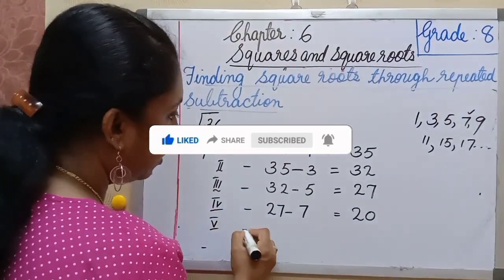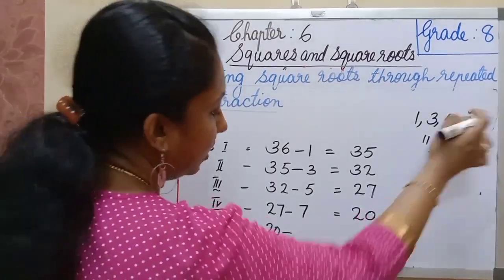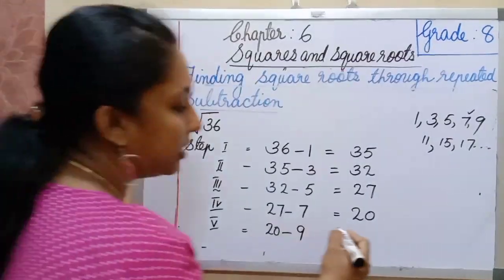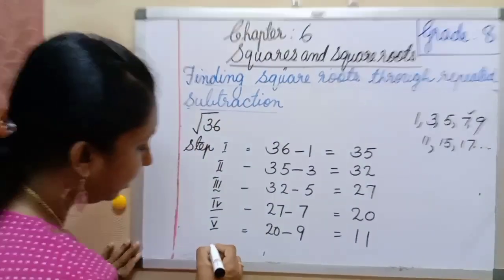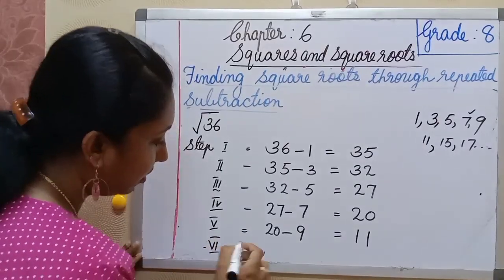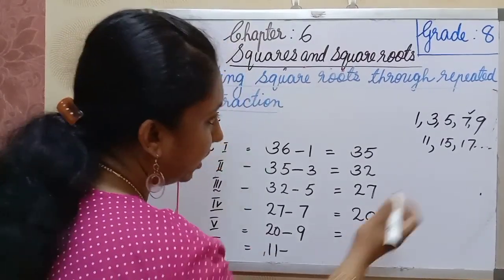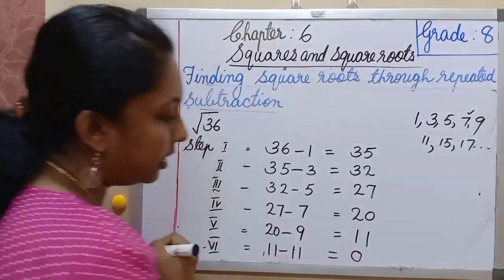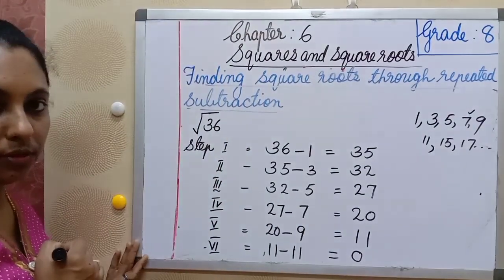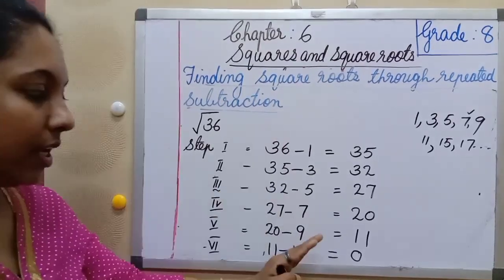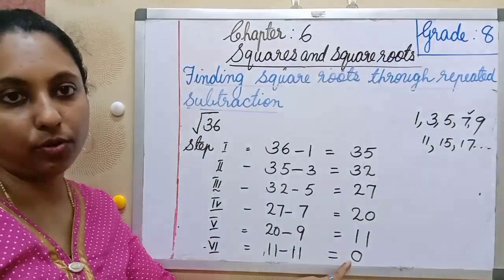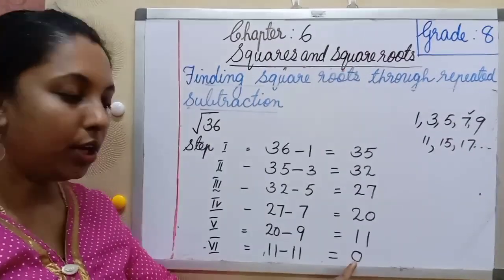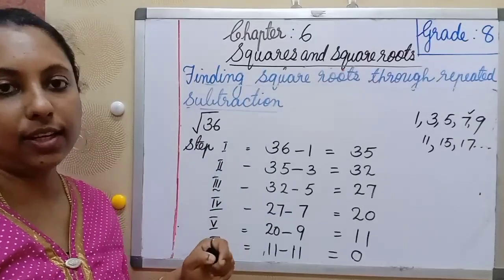Step 5: 20 minus 9 equals 11. Step 6: 11 minus the next odd number, 11, equals 0. We check which step gives us 0 — that is step 6. So the square root of 36 is 6.